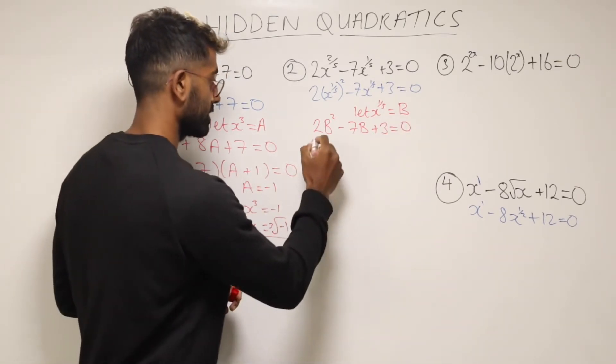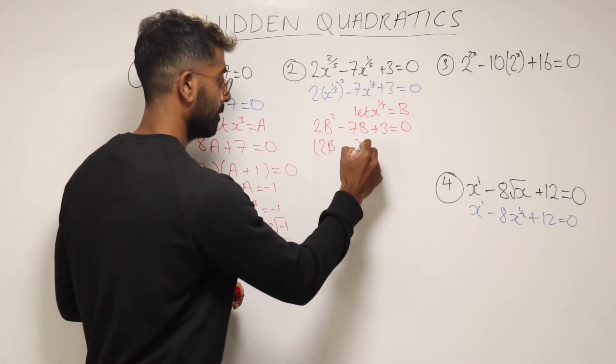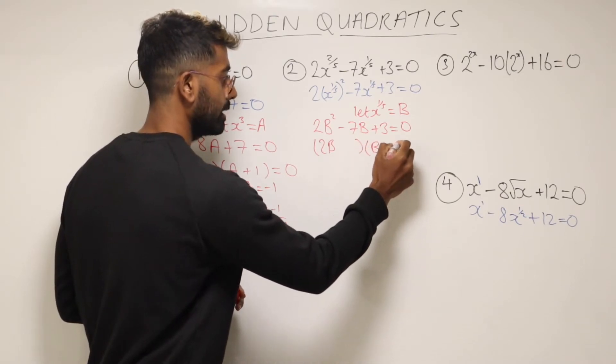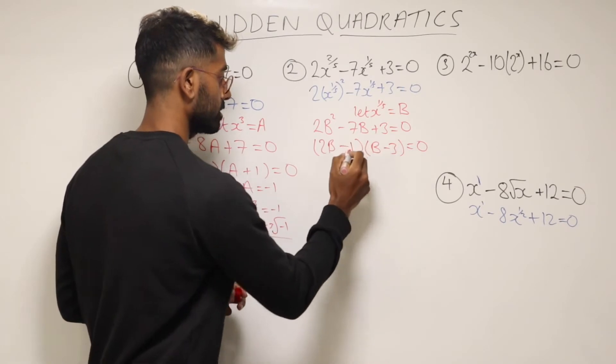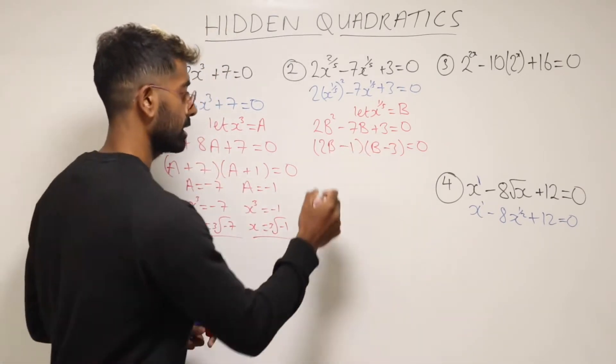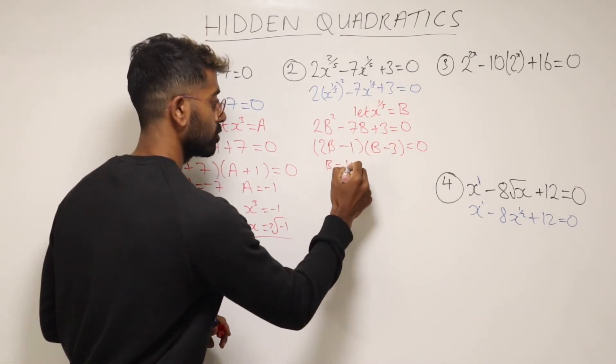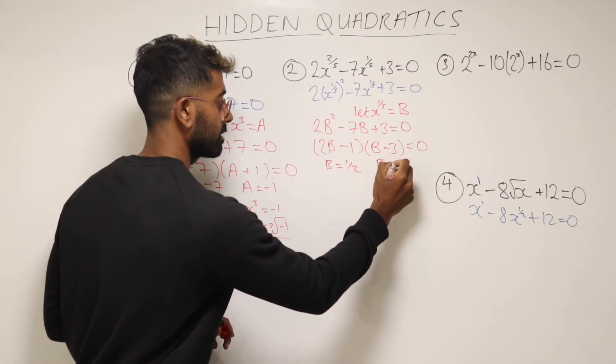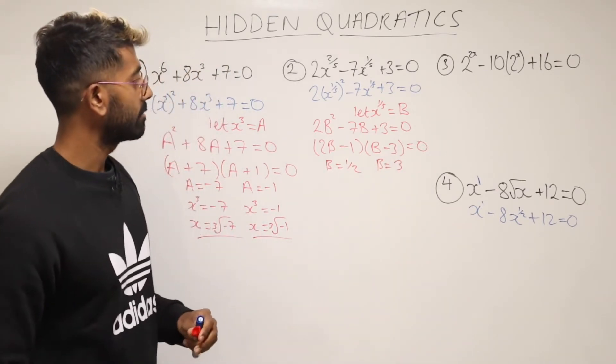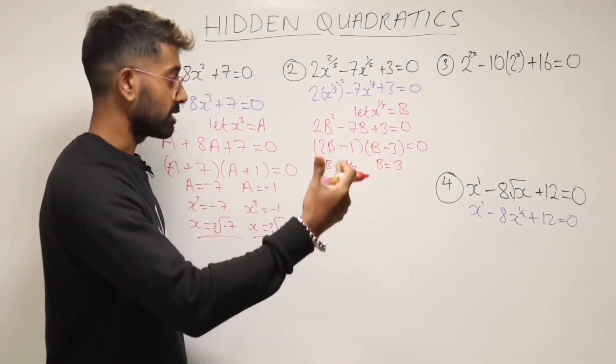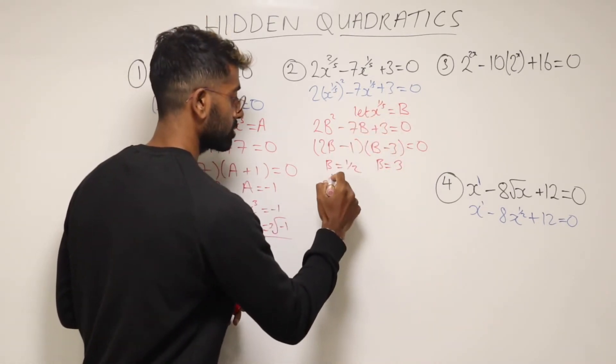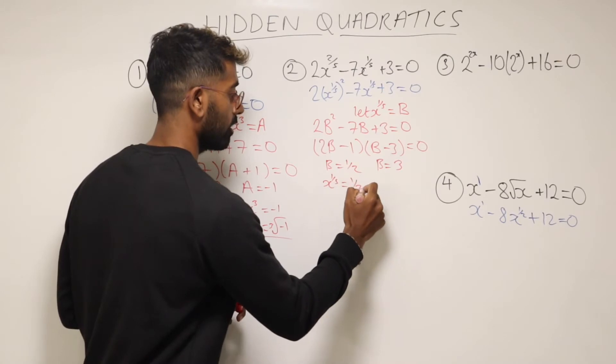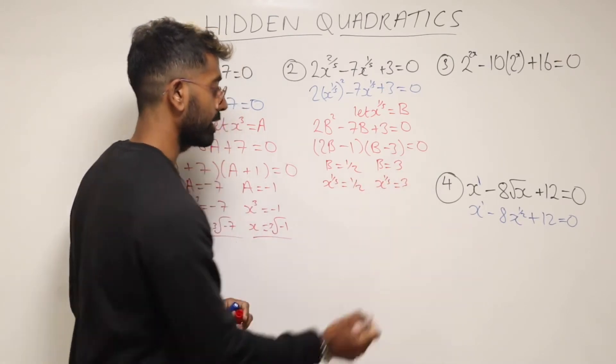And then we can look at factorising again. So I think 2B and B and that would be 3, 1, minus and minus. There it is, factorised. So then we'll have B is equal to a half and B is equal to 3. But remember we need to give answers that are x equals something. But we said B is the same as x to the fifth. So x to the fifth is equal to a half and x to the fifth is equal to 3.